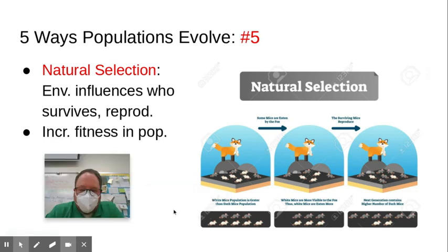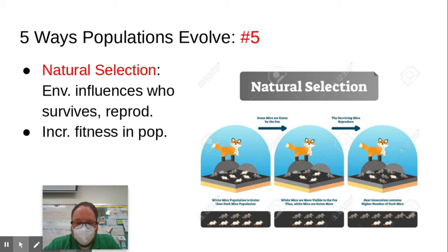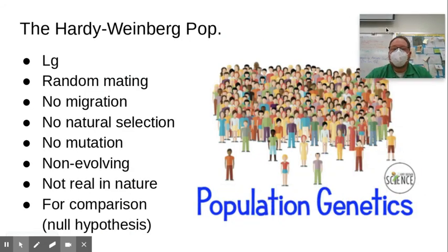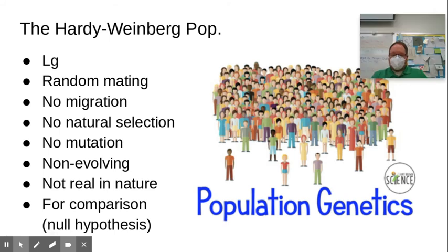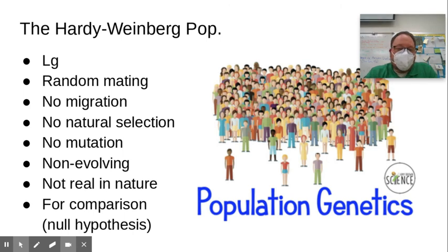The fifth way populations change is natural selection — the environment can influence who survives and reproduces and who doesn't. For a population to be in Hardy-Weinberg equilibrium, it's got to be a large population to avoid drift, there must be random mating so every organism has equal opportunity to reproduce, there needs to be no migration — nobody in, nobody out — no natural selection, and no mutation, so you don't get new alleles introduced.